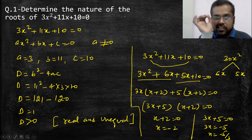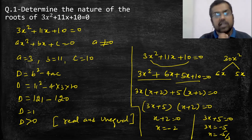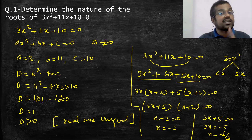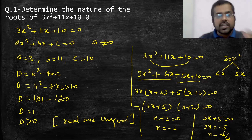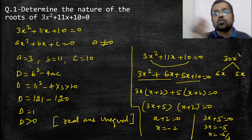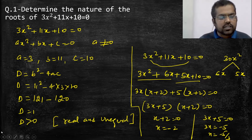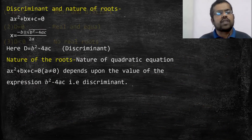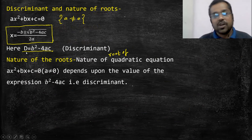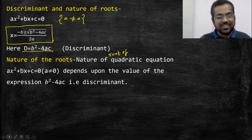Summary: किसी भी quadratic equation का nature पता करने के लिए discriminant solve करते हैं — b² - 4ac। D > 0 → roots are real and distinct/unequal; d = 0 → roots are real and equal; d < 0 → no real roots। D इसलिए decide करता है क्योंकि x = (-b ± √(b²-4ac)) / 2a में root वाला term, यानी discriminant d, ही x की value decide करता है।